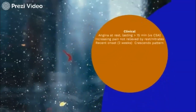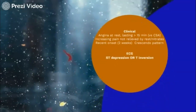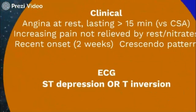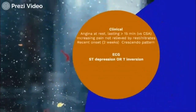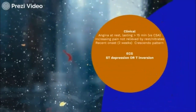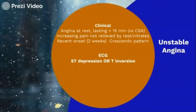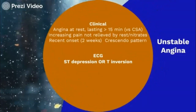Whenever you suspect an acute coronary syndrome, if the patient has ST depression or T inversion, we call it unstable angina. So anginal chest pain plus ST depression or T inversion is what we call unstable angina.